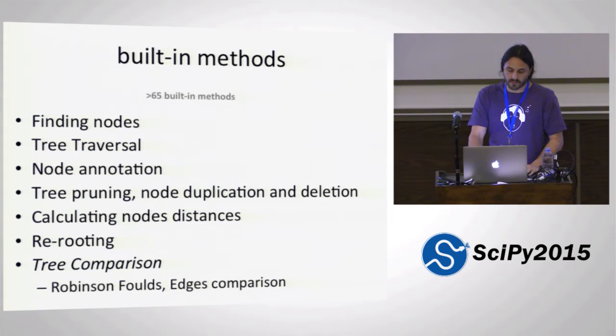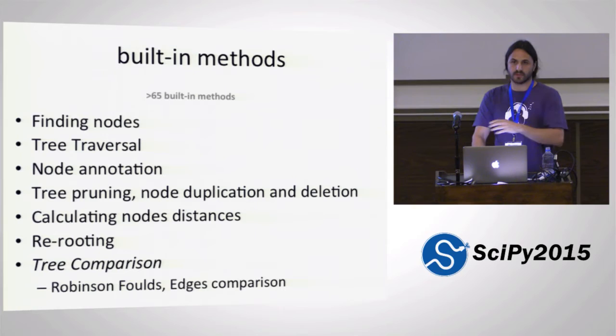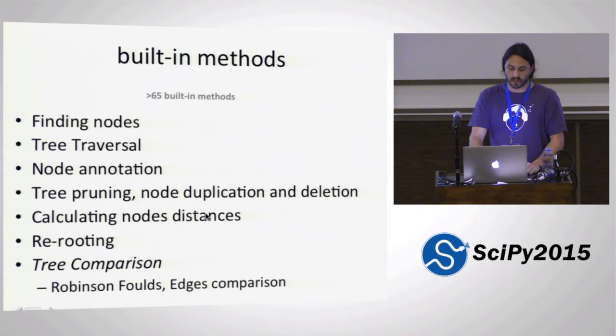There are a number of built-in methods in the tree class — basically over 65 built-in methods for finding nodes or traversing trees using many different strategies. There are also some advanced options to dynamically stop the tree traversal or start from different points, functions to annotate nodes with custom attributes, and functions to modify the tree structure very easily — you can prune a tree, duplicate a part of the tree, delete nodes, concatenate, and so on. It also has options for calculating distances among all nodes in a tree, and rerouting.